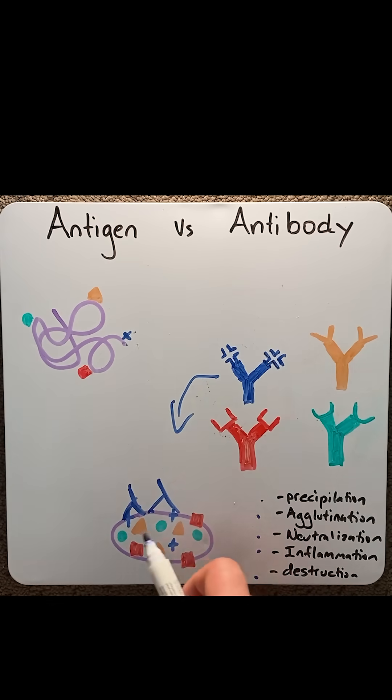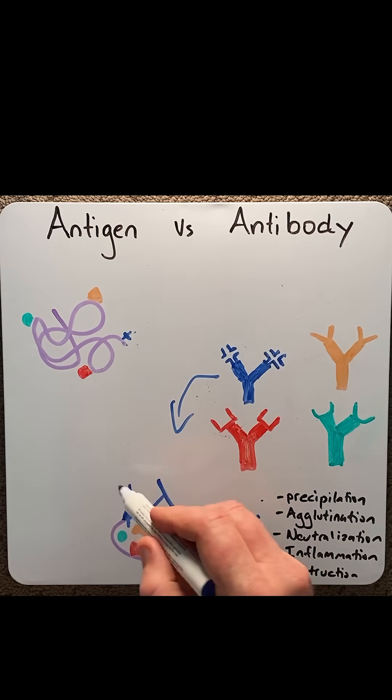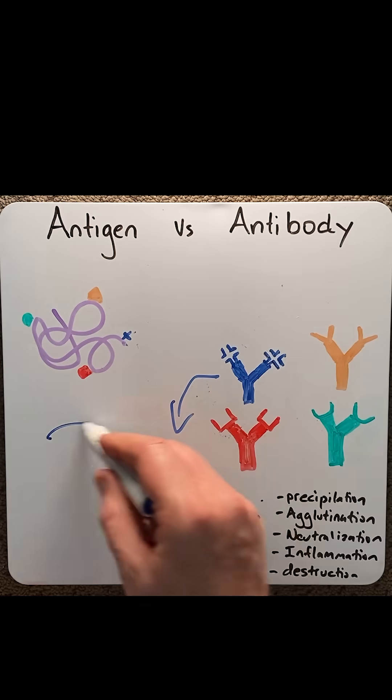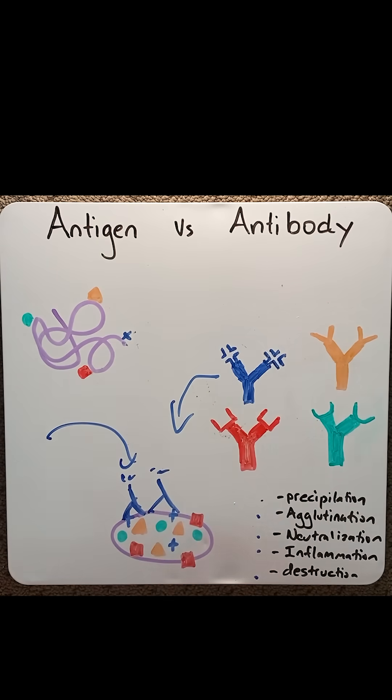And finally, destruction. This can happen through opsonization or phagocytosis or lysis, where the antibody will flag a response and other white blood cells will come in to cause that destruction.